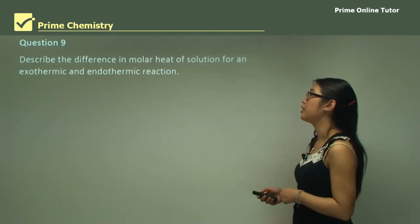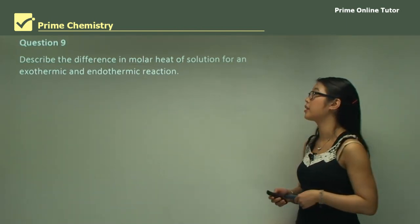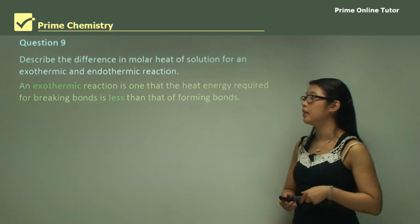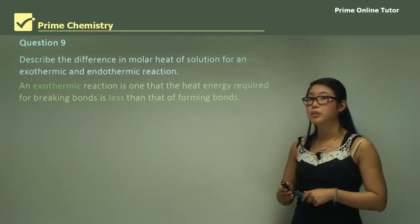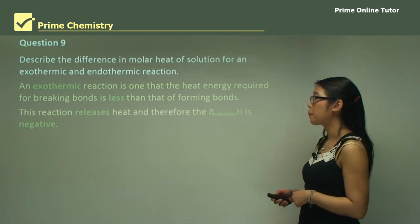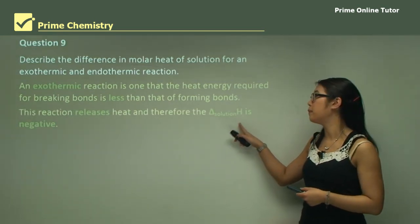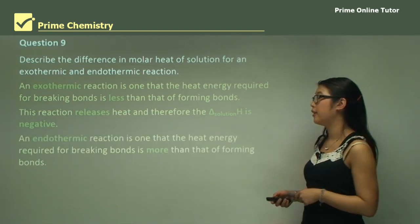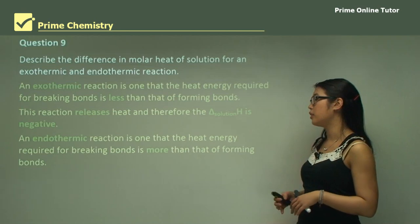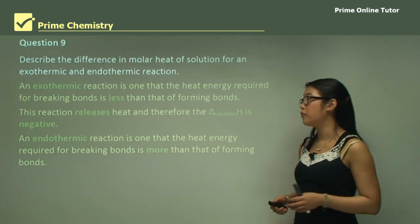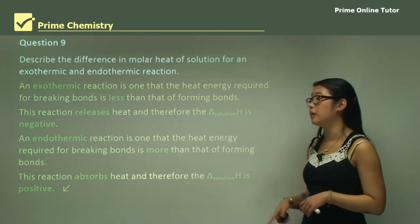Question nine: describe the difference in molar heat of solution for exothermic and endothermic reactions. In an exothermic reaction, the energy required to break bonds is less than that needed to form bonds, so heat is released and delta H is negative. In an endothermic reaction, the energy to break bonds is more than that to form bonds, so heat is absorbed and delta H is positive.